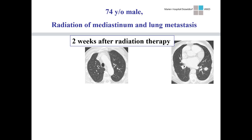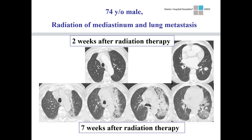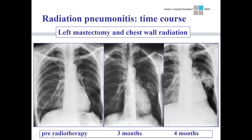Usually, immediately after therapy we don't see anything. This patient underwent complex radiation for the mediastinum and a single lung metastasis — two weeks after radiation there is no abnormality, which is normal; it's too early. Seven weeks after radiation therapy the image has completely changed: we see a consolidation with a sharp border crossing the anatomical border of the lobar fissure, and around the metastasis some more diffuse consolidation. So: no findings early on, then consolidation after two to three months of reaching the threshold dose.